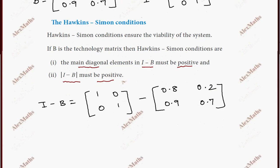On matrix basis, we will subtract. So I is the identity matrix. First element: subtract 1 minus 0.8, 0 minus 0.2, 0 minus 0.9, 1 minus 0.7 equals 0.3.